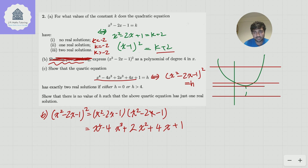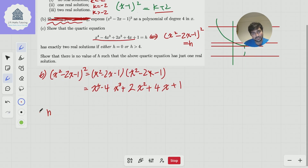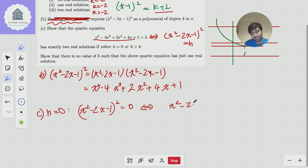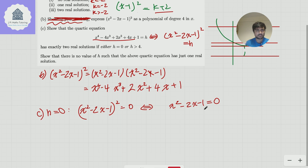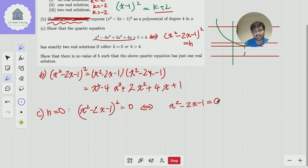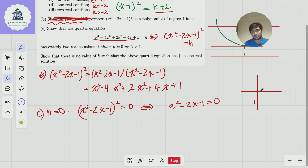When h is 0, we get x squared minus 2x minus 1, all squared, equals 0, which is true if and only if x squared minus 2x minus 1 equals 0. This quadratic has two real solutions — you can use the quadratic formula, check the discriminant is positive, or simply note that it's a positive quadratic with a negative y-intercept, so it must cross the x-axis twice, giving two distinct real solutions. In fact, one must be positive and one negative.